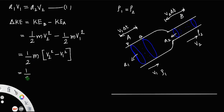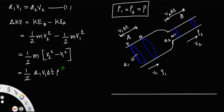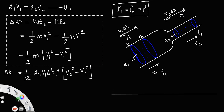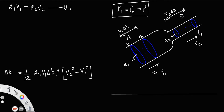Mass equals volume into density, and volume means A1 times length, which is A1 V1 delta T. Considering the density as rho (since rho1 equals rho2 equals rho), the change in kinetic energy becomes delta KE equal to half A1 V1 delta T rho into V2 squared minus V1 squared. Let us call that equation number 2.